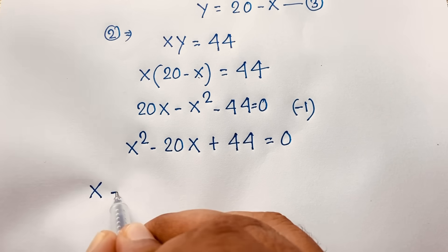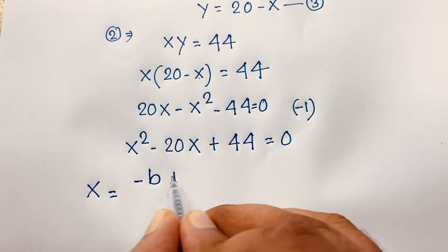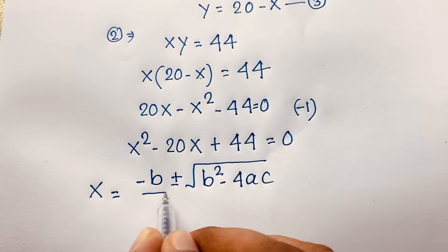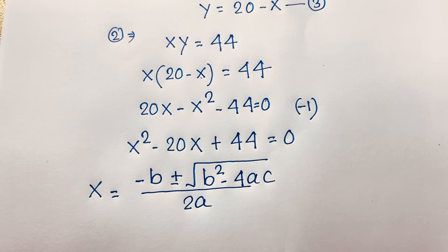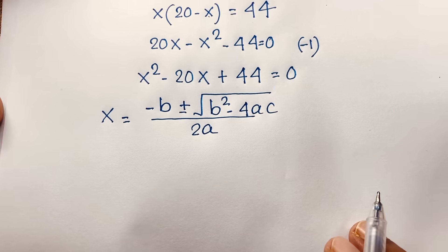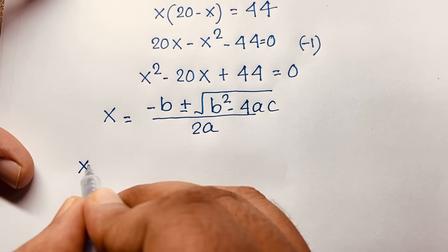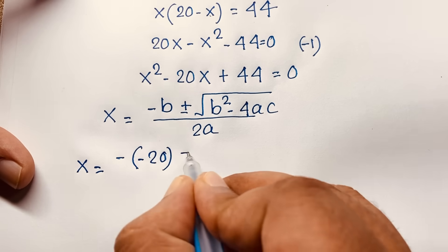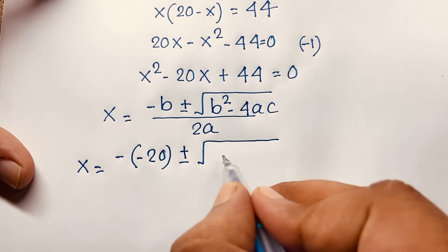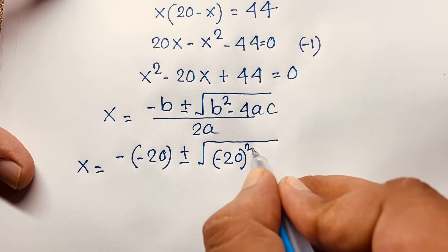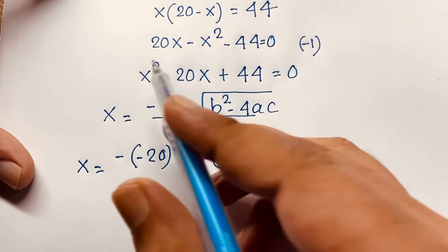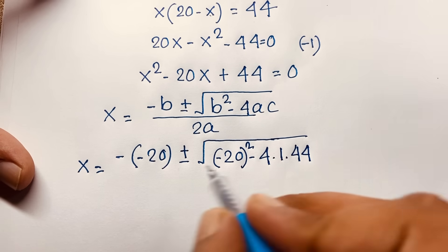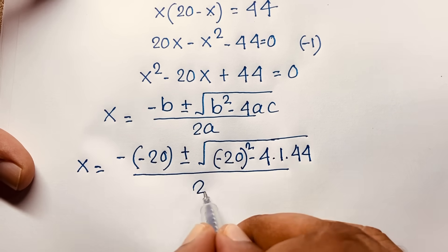Applying the quadratic formula: x equals negative b plus or minus square root of (b squared minus 4ac), all over 2a. Here b is negative 20, so negative b is positive 20. We get x equals 20 plus or minus square root of (negative 20 squared minus 4 times a times c), where a equals 1 and c equals 44, over 2 times 1.